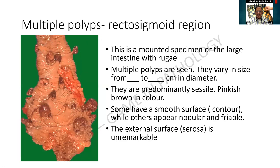This is the third specimen retrieved from the internet. It is a resected specimen of the large intestine. I am finding the rugae of the intestine. Multiple polyps are seen and they vary in size — a small polyp, a larger polyp, and a much larger polyp. They vary in size from dash to dash centimeters. They are predominantly sessile; I do not find any stalk, though maybe one particular one is having a stalk. They have got a smooth surface — one has a smooth glistening surface whereas some are appearing a little friable. These findings you should mention in your description.